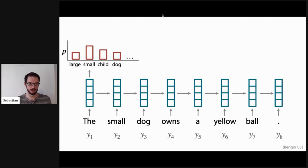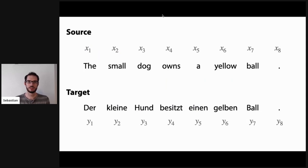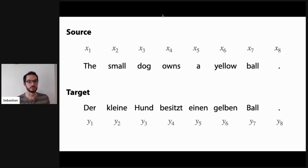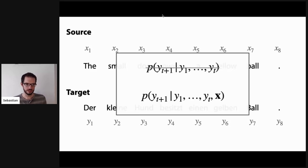In natural language generation, we often want to condition on some kind of source sentence. For example, in English-to-German machine translation, we have a source X_1 through X_8 — 'the small dog owns the yellow ball' — and a target Y_1 through Y_8, the same sentence translated into German. Our objective becomes the prediction of the next token given the context and the source, written as P(Y_{t+1} | Y_1...Y_t, X).